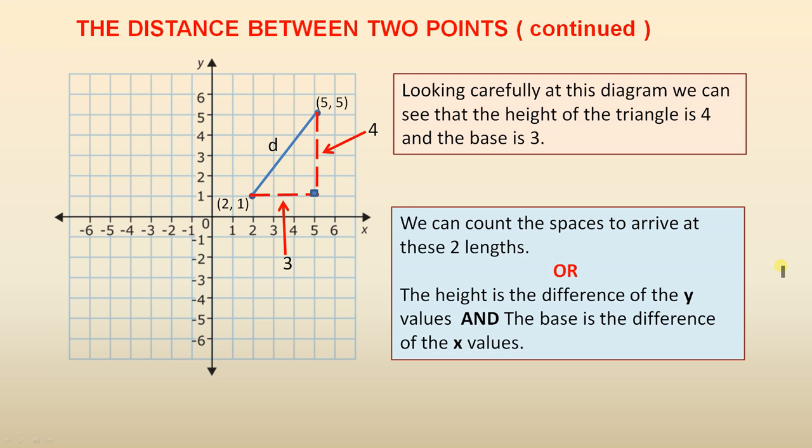We can count the spaces to arrive at these two lengths. So we can go 1, 2, 3, 4, that gives you your 4, or we can go 1, 2, 3, and that gives you your 3.